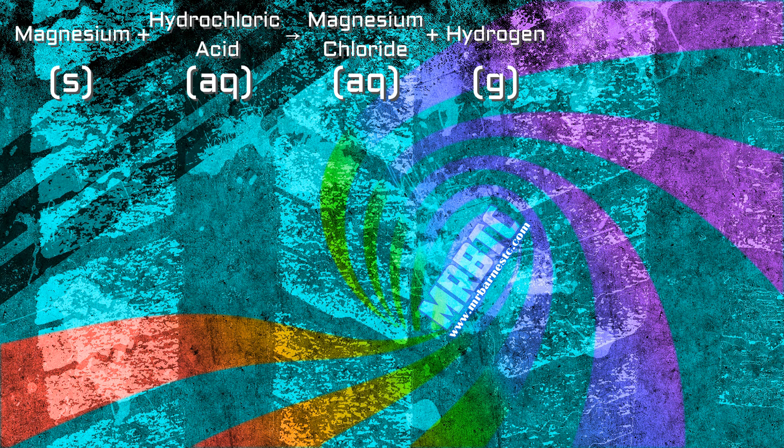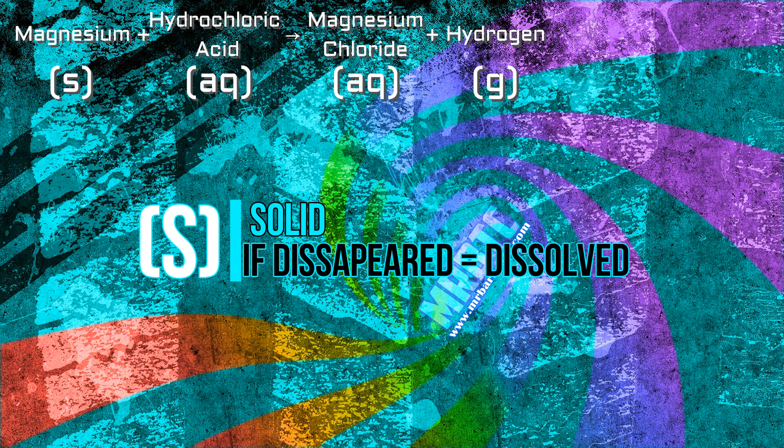Now when it comes to the exam you may not be able to remember exactly what's happening, however if you use the state symbols it's easy to work out. So as you can see here we have a solid on the left hand side but not on the right, so that means it's disappeared and if it's disappeared it's dissolved.